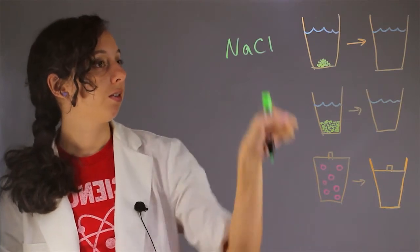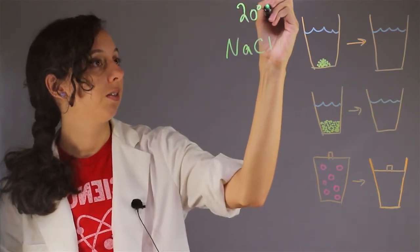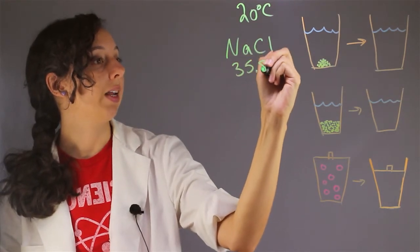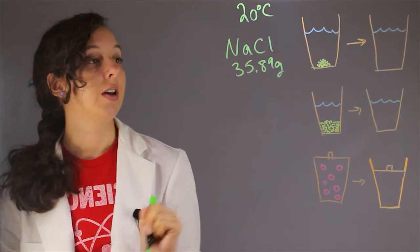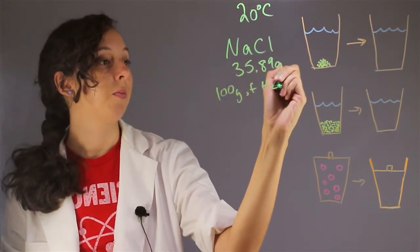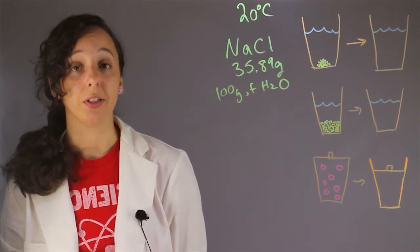At 20 degrees Celsius, sodium chloride can fit 35.89 grams in every 100 grams of water. So this is how soluble salt is in water.